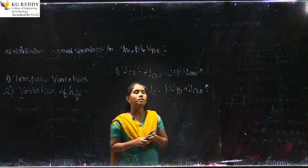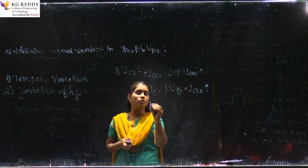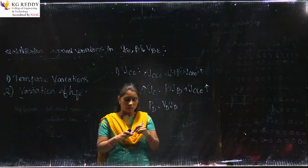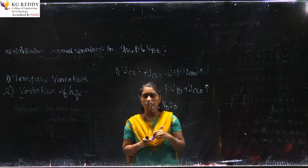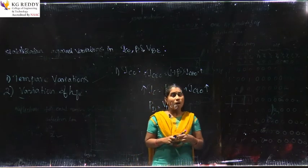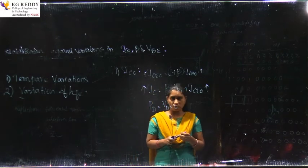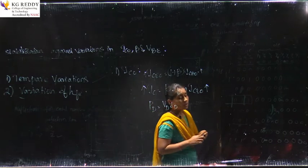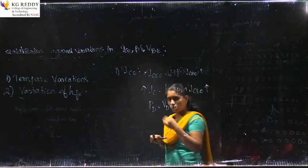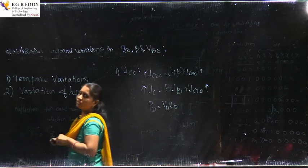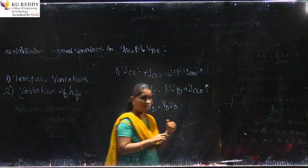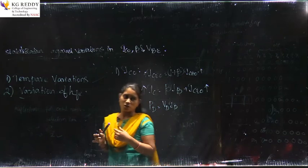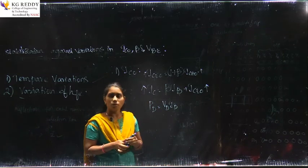Now regarding thermal runaway: the power dissipated is nothing but Pc equals Vc times Ic. As the collector current increases at the output side, the power dissipated also increases. As the power keeps increasing, there is a chance to destroy the transistor — if the transistor is not capable of handling that power, it would be damaged. This is the concept of thermal runaway.